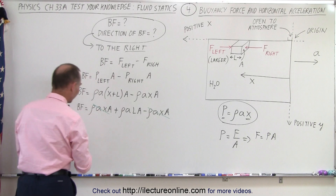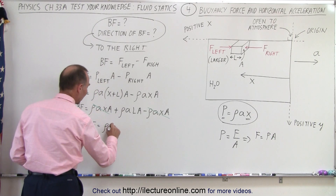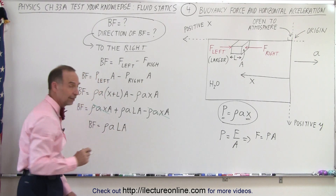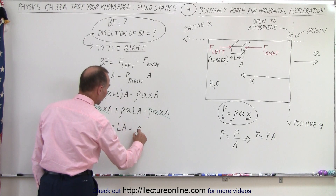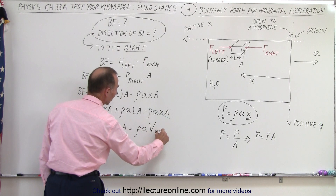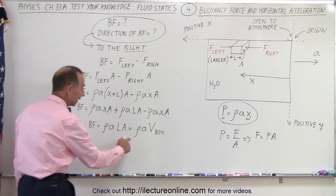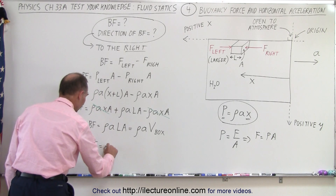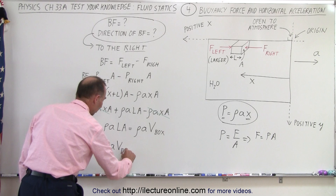After cancellation, the buoyancy force equals the density of the liquid times acceleration times the length of the box times the cross-sectional area. Since length times cross-sectional area is simply the volume of the box — which equals the volume of displaced liquid — the buoyancy force equals the density of the liquid times acceleration times the volume of the displaced liquid.